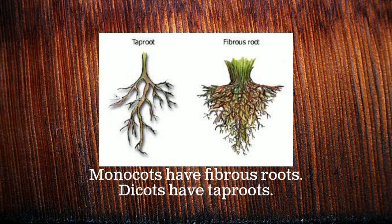Another distinguishing feature of monocots and dicots is that monocots have fibrous roots, or many roots, while dicots have tap roots — one main root with smaller roots branching off.